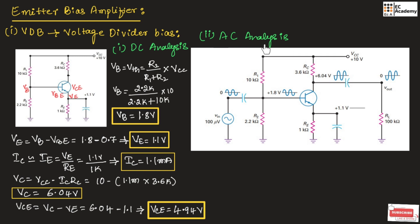Now let us understand the AC analysis for the voltage divider bias circuit. We will connect coupling capacitors as well as a bypass capacitor along with the AC source for the amplifier circuit. Coupling capacitors are connected across input as well as output, and the bypass capacitor is connected in parallel to the emitter resistor. Connecting the bypass capacitor parallel to the emitter resistor provides more stability in the Q point. Coupling capacitors help in blocking DC, maintaining the biasing of the amplifier and allowing only AC signals.